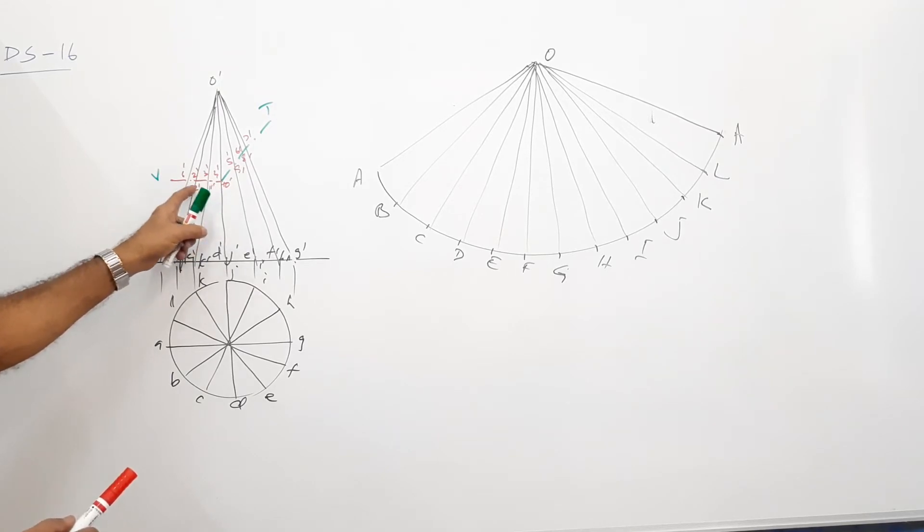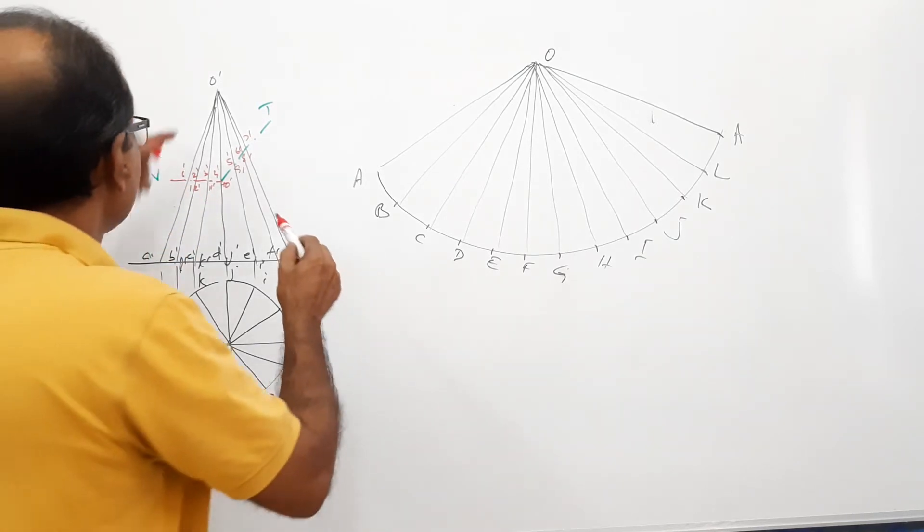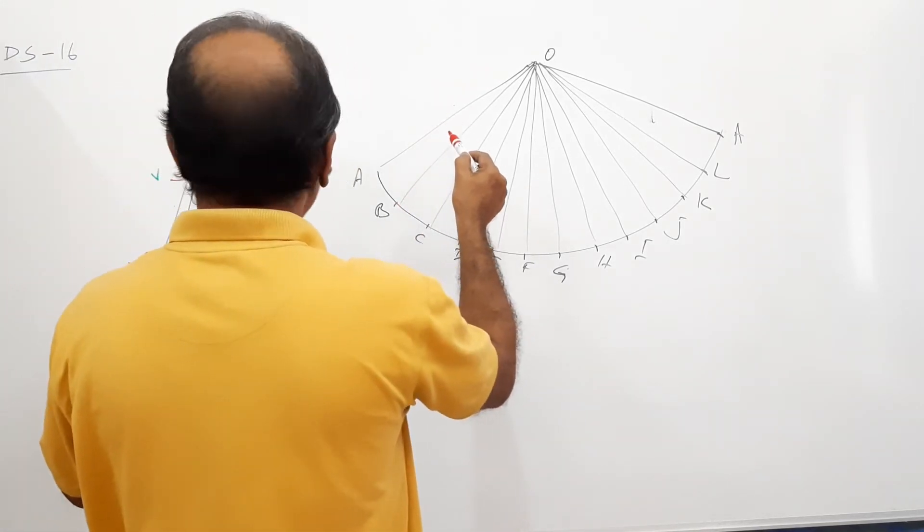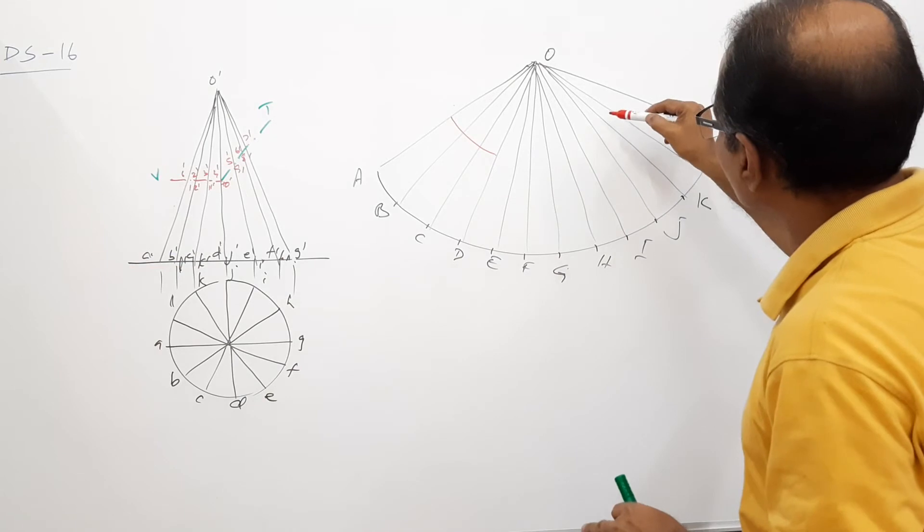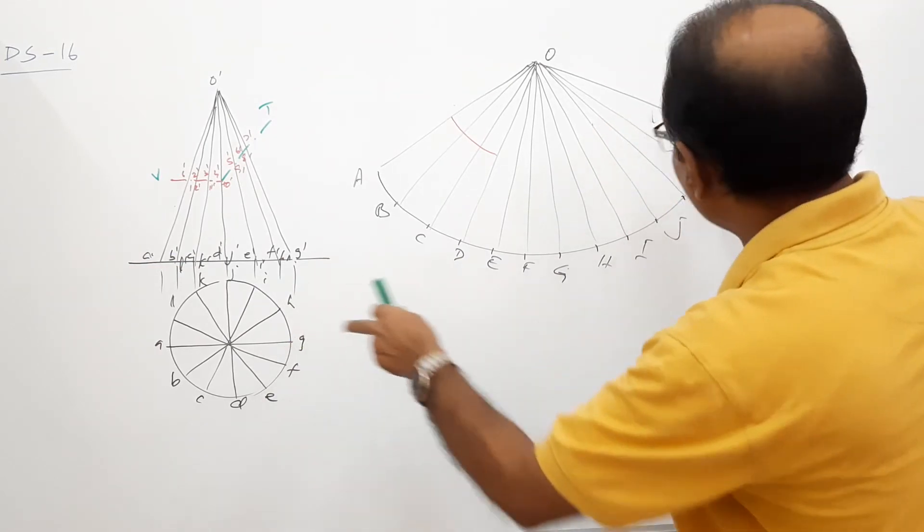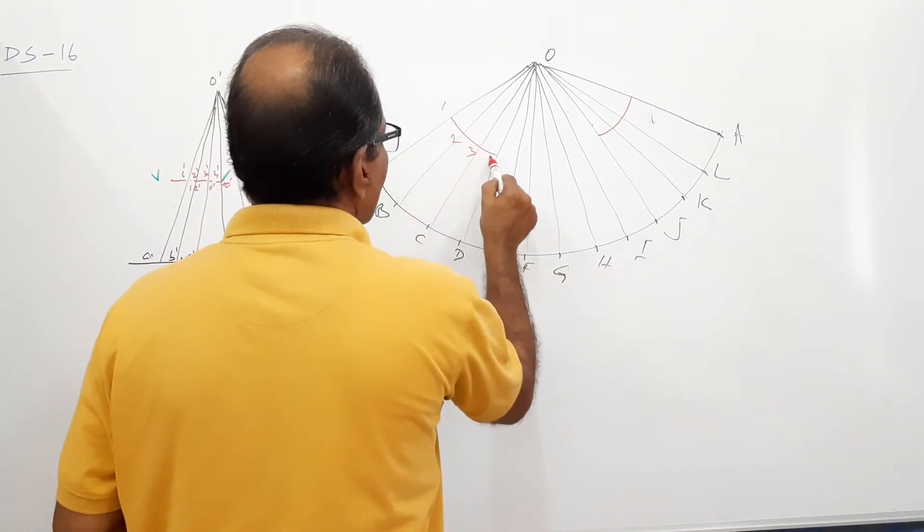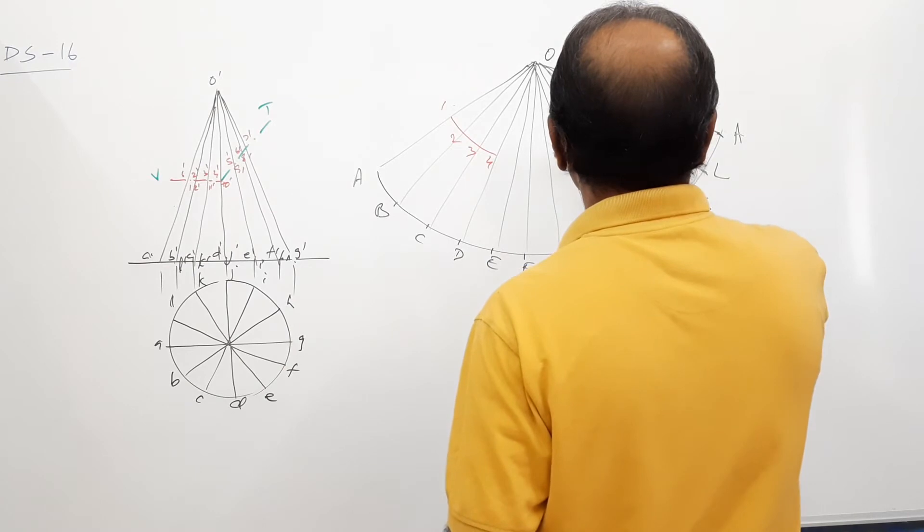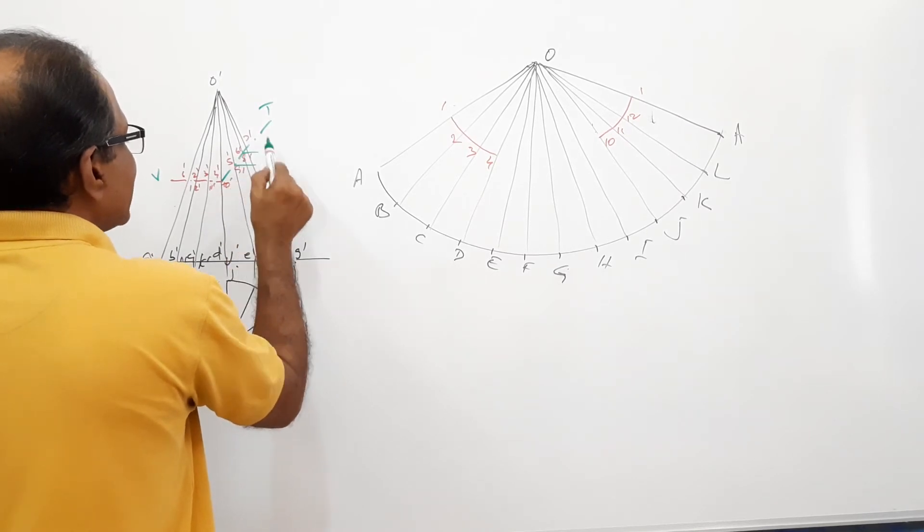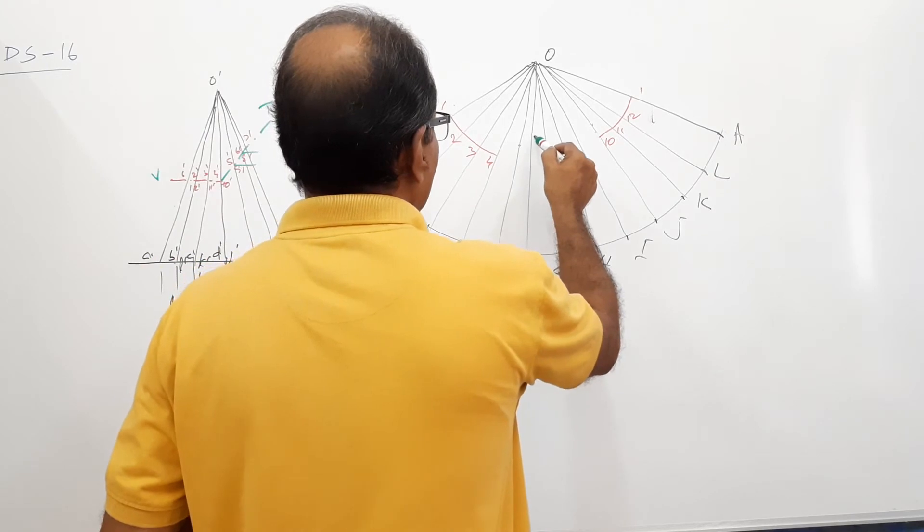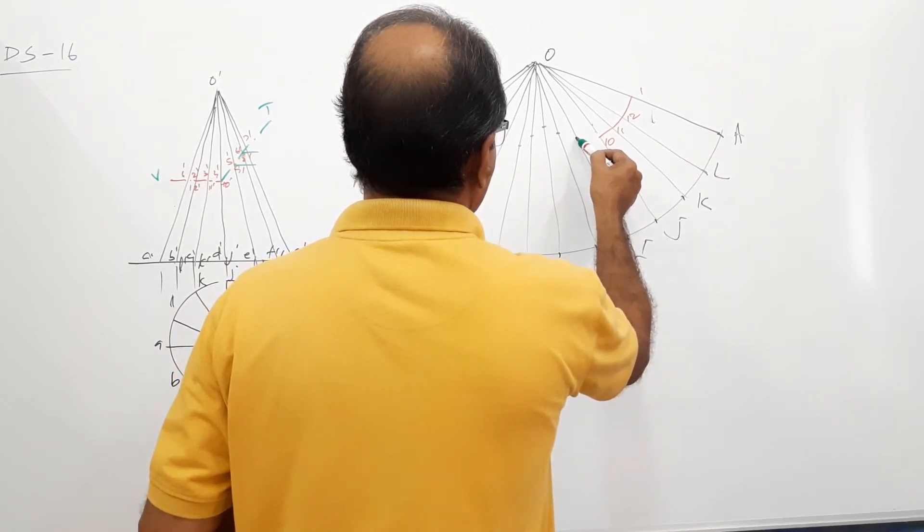Take 1 to 4. 1, 2, 3, 4. 11, 12, 1. 10, 11, 12, 1 on this half. So what you do is, take this O dash, 1 dash in your compass and draw arc up to OD. And take the same distance in your compass and draw arc between J and A. 1, 2, 3, 4, 10, 11, 12, 1.